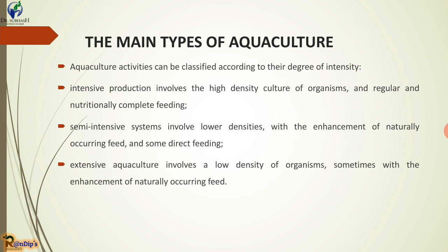Semi-intensive systems involve lower density with the enhancement of naturally occurring feed and some direct feeding. The enhancement of naturally occurring feeding is a key feature of semi-intensive aquaculture.